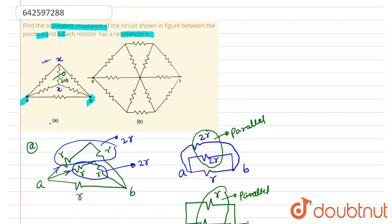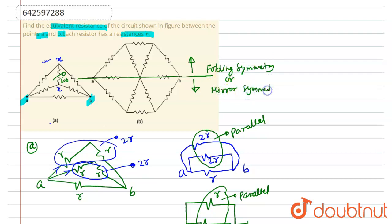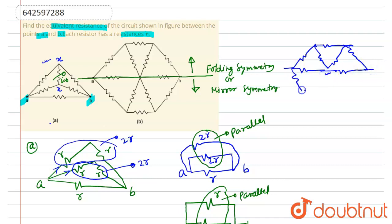So R/2 is the answer to the first part. In the second part, we can see that along OB, the same resistances are above the horizontal line as below. So we can solve it using folding symmetry or mirror symmetry. If we use mirror symmetry, then the circuit will become like this, with no connection at this point — it should be left hanging in the air.